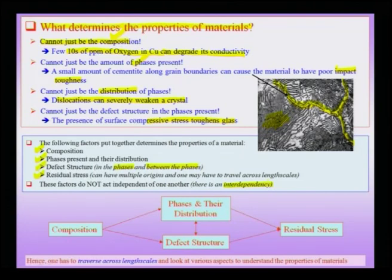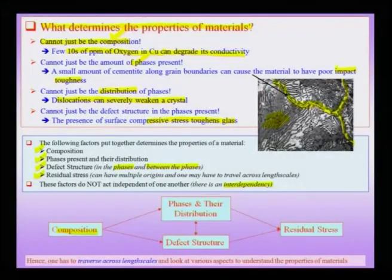Let us summarize this slide because this happens to be an important overview slide. This will set the tone: when I have a bulk material vis-à-vis a nanomaterial or nanostructure, how the properties are going to arise, and how I can use the very same concepts in this slide to engineer the nanostructure or nanomaterial to obtain a specific set of properties — which is what gives the beauty to nanomaterials and nanostructures. I need to understand the composition of the material, which could be spatially varying. I need to understand the phases present and their distribution, and what kind of distributions these phases can have and how this determines the properties.